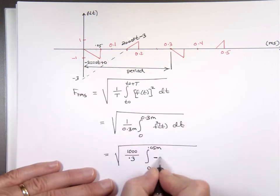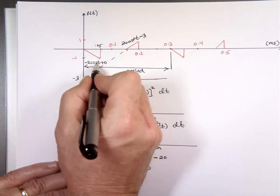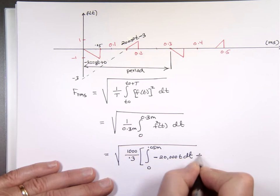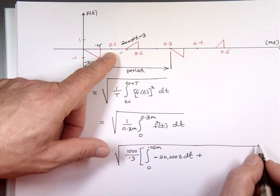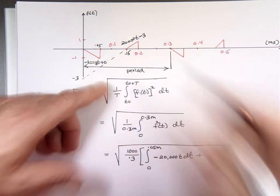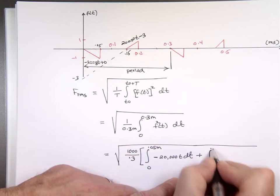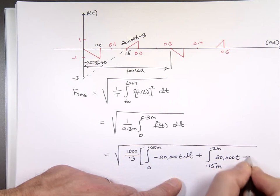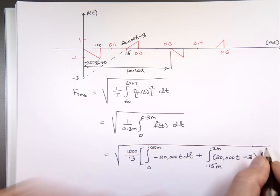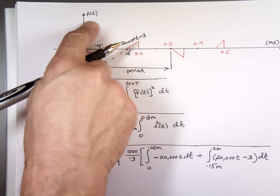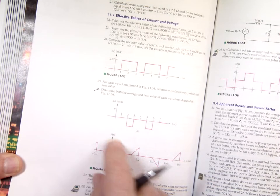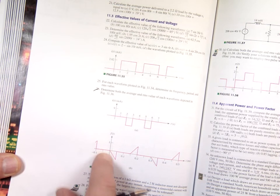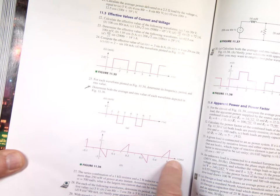The first function is negative 20,000t, and the second piece is 20,000t minus 3. The y-axis doesn't appear to be in millis or micros, so it's just negative 1 and positive 1 in regular units. Now we need to square each function and integrate — so F(t)² dt for each interval.